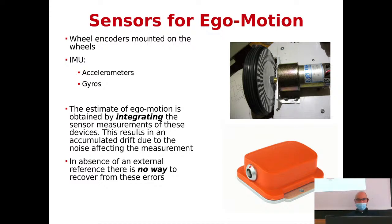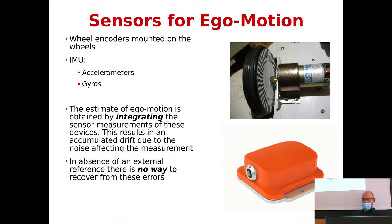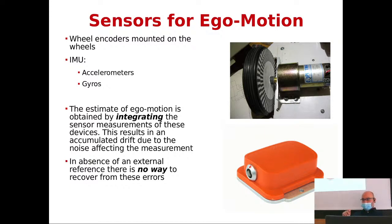Normally, sensors for ego motion provide only an incremental estimate — basically a velocity. A gyro measures rotational velocity around one or three axes, and an accelerometer measures acceleration. To figure out position from velocity or acceleration you have to integrate once or twice, and integrating also integrates the error. If you have a constant bias in the accelerometer, your position estimate will grow quadratically; if it's in the gyroscope, it will grow linearly.